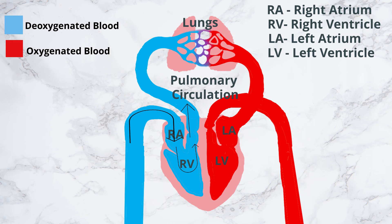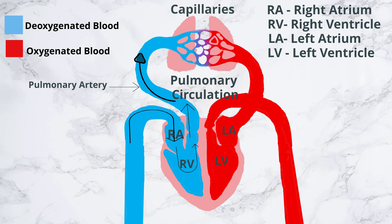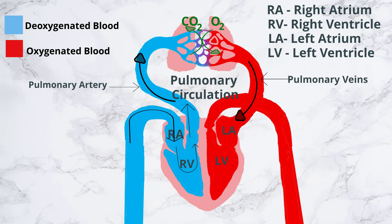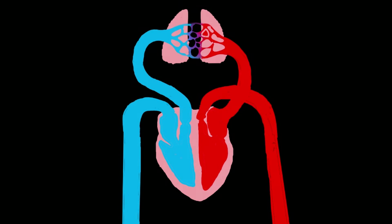The deoxygenated blood pumped into the pulmonary artery is passed onto the right and left lungs. In pulmonary capillaries, blood unloads carbon dioxide, which is exhaled, and picks up oxygen. The freshly oxygenated blood then flows into pulmonary veins and returns to the left atrium. This pathway constitutes the pulmonary circulation.